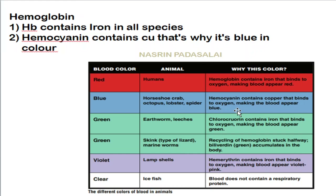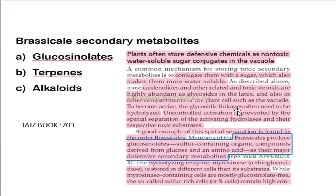In some organisms like earthworms, the blood is green in color due to the presence of a different pigment. This particular table is also helpful for reference on this topic.